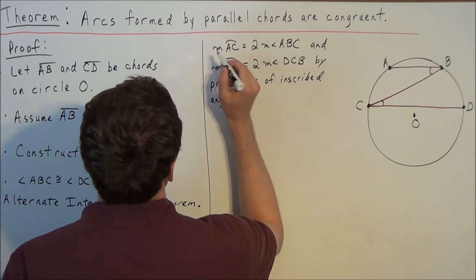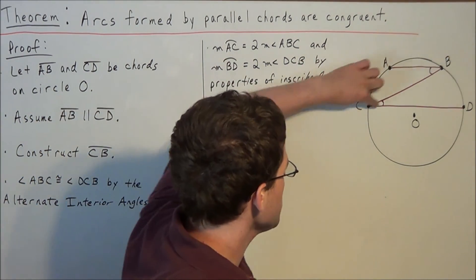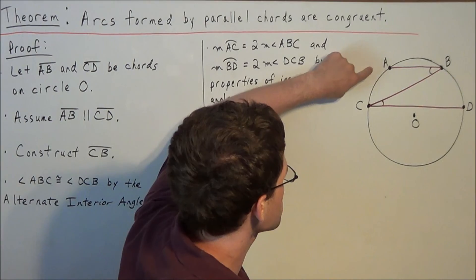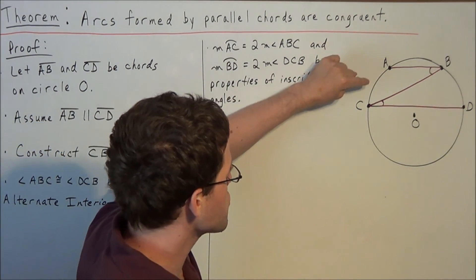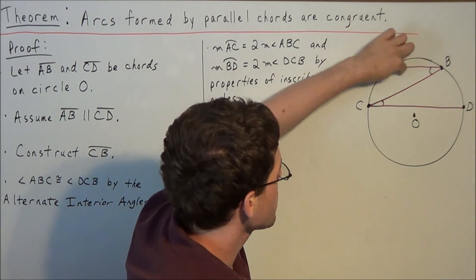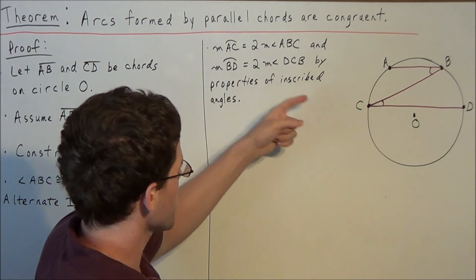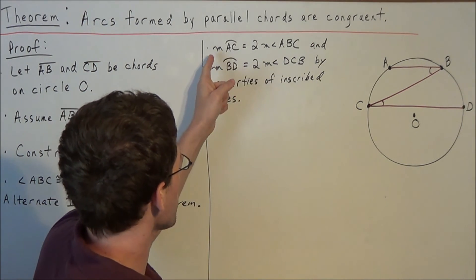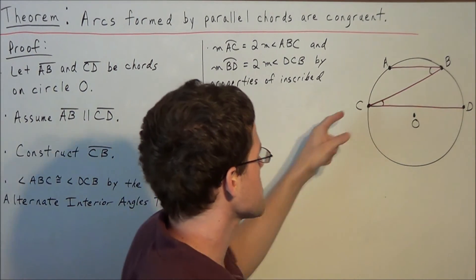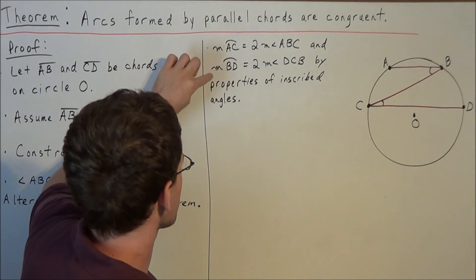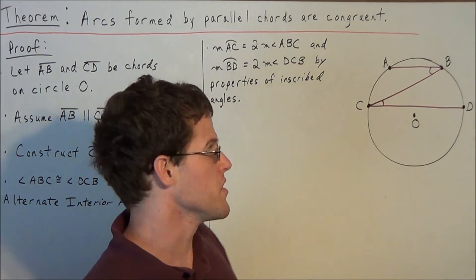We'll use the diagram again to confirm this. But notice how angle ABC is an inscribed angle intercepting arc AC. And by the inscribed angles theorem, we know that the measure of angle ABC is equal to one-half the measure of arc AC. So another way to say that would be to say that the measure of arc AC is equal to twice the measure of inscribed angle ABC. And by a similar argument, we could say the same thing for the measure of arc BD being twice the measure of angle DCB.